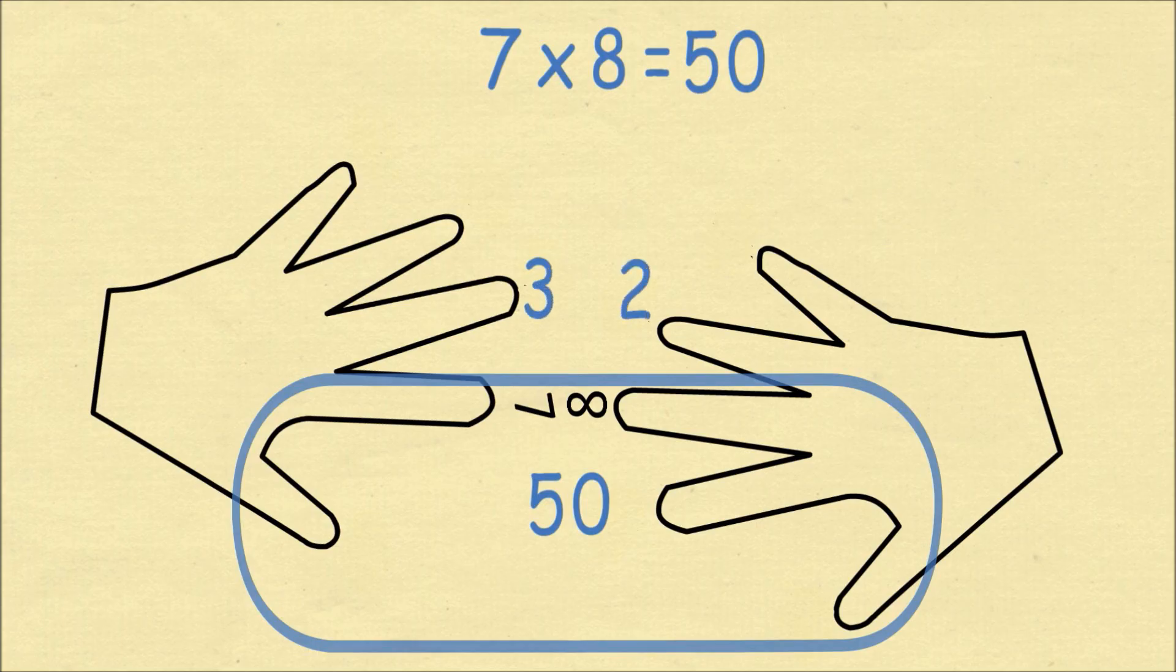On the left hand, there are 3 fingers above the touching fingers, and on the right hand there are 2 fingers above the fingers touching. We multiply 3 and 2 to get 6, and that gets us our answer of 56. But why does this method work?